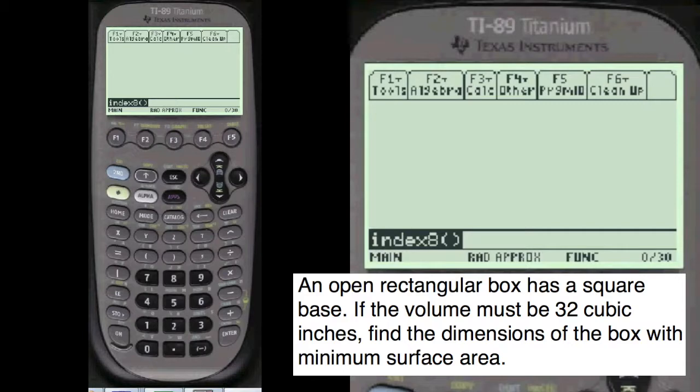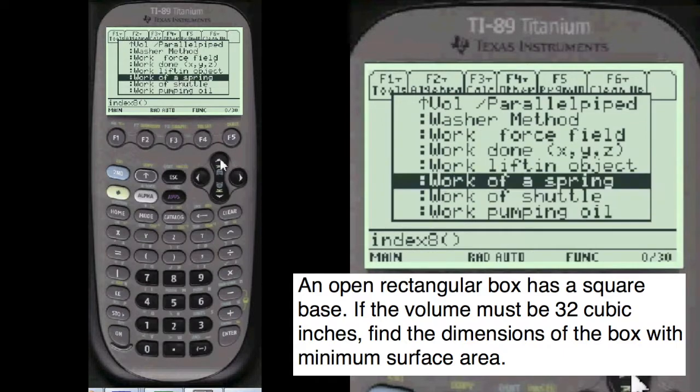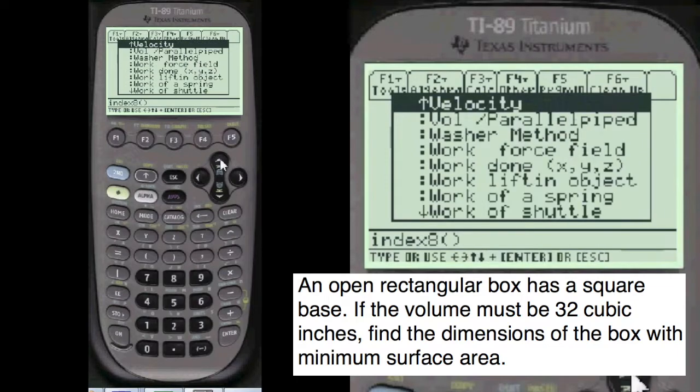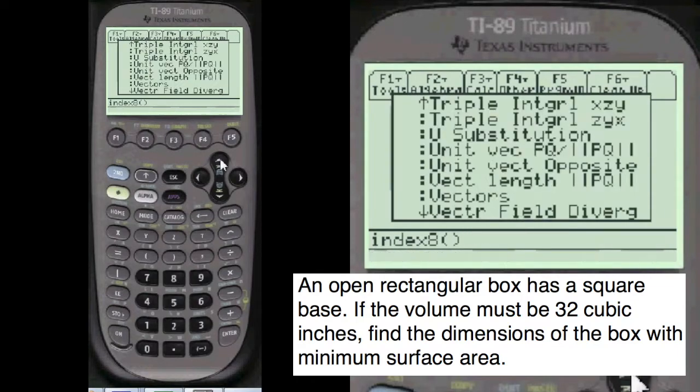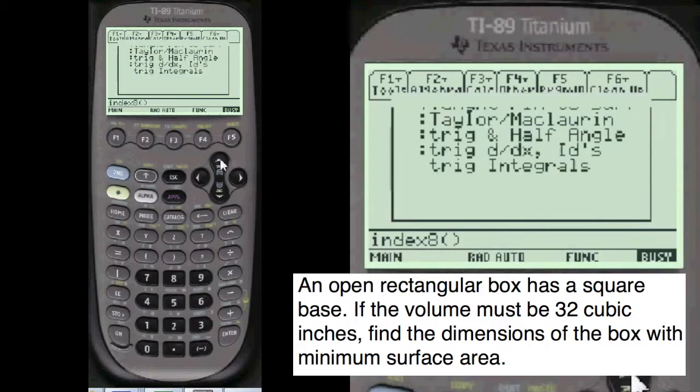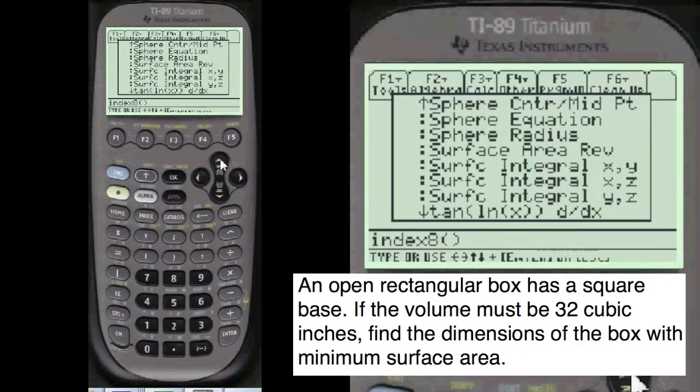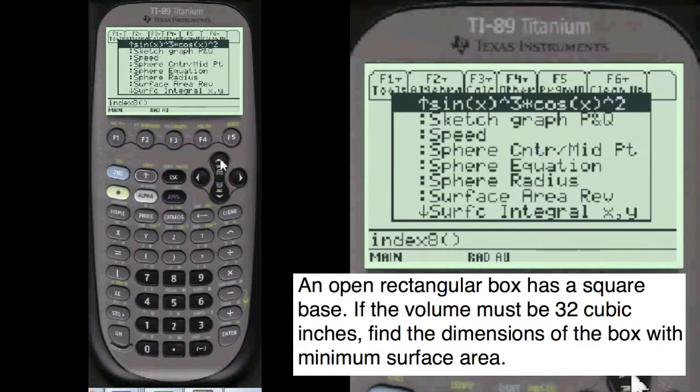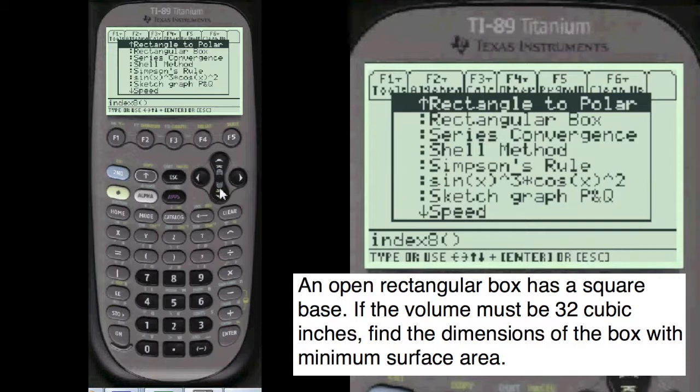Let's do an index 8 to get to my menu. We're going to go to the bottom of the menu and go to the R section of the alphabet here and find rectangular box. There's rectangular box.